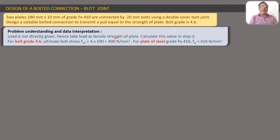The bolt grade is 4.6, which means the ultimate bolt stress FUB is 4 × 100 = 400 N/mm². The plate is of steel grade FE410, so FU for the plate is 410 N/mm². The steel used for the plate and for the bolt are different, and this distinction is important for the calculations.